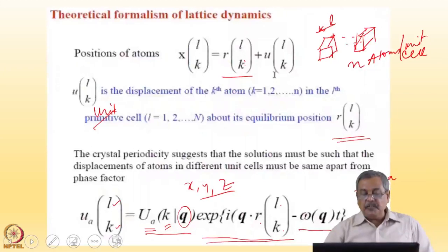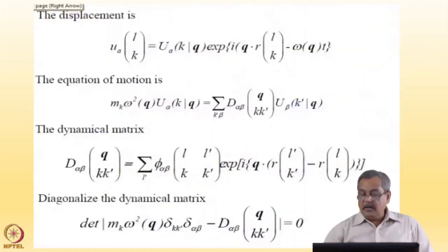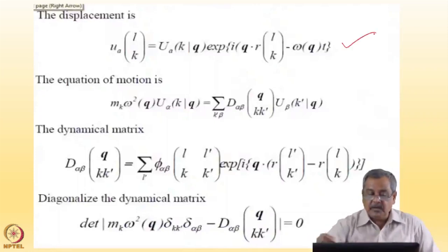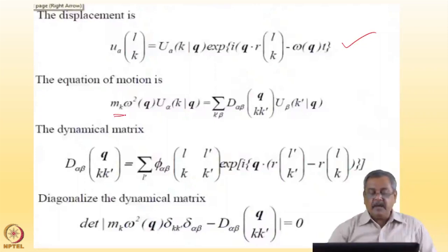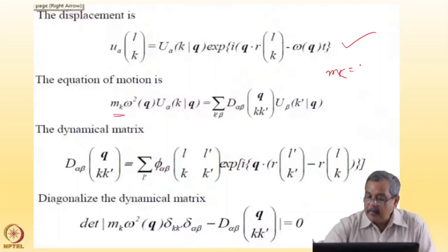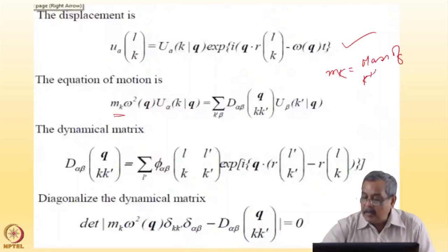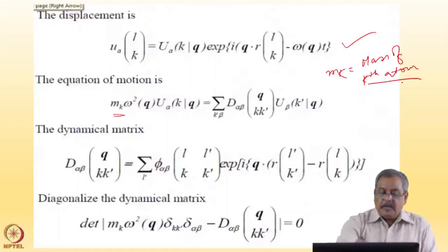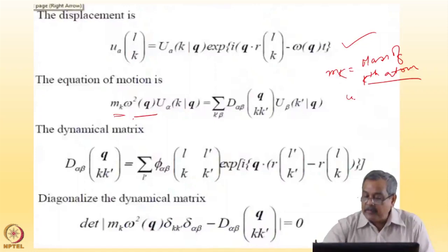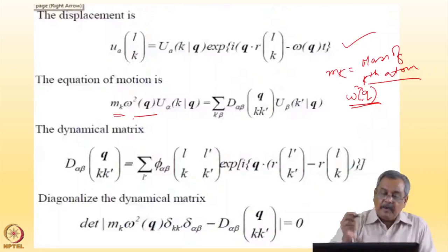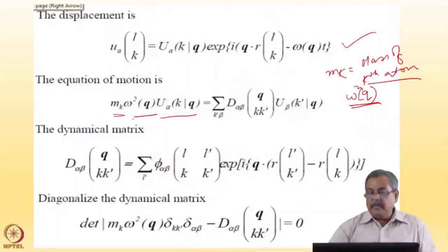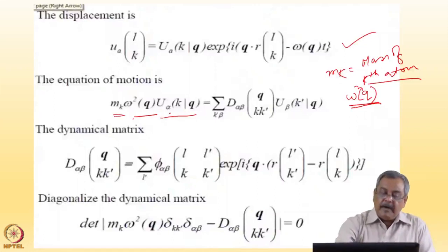In this formalism I will go for the solution for the equation of motion. Here, differentiating twice with respect to time, e to the power i·ω·t gives m_k — the mass of the k-th atom — times ω²(q) into the displacement vector. Now it is ω as a function of q, because depending on the phonon wave vector, ω will be different. So ω²(q) times the displacement vector, where α goes over x, y, z components of the displacement.